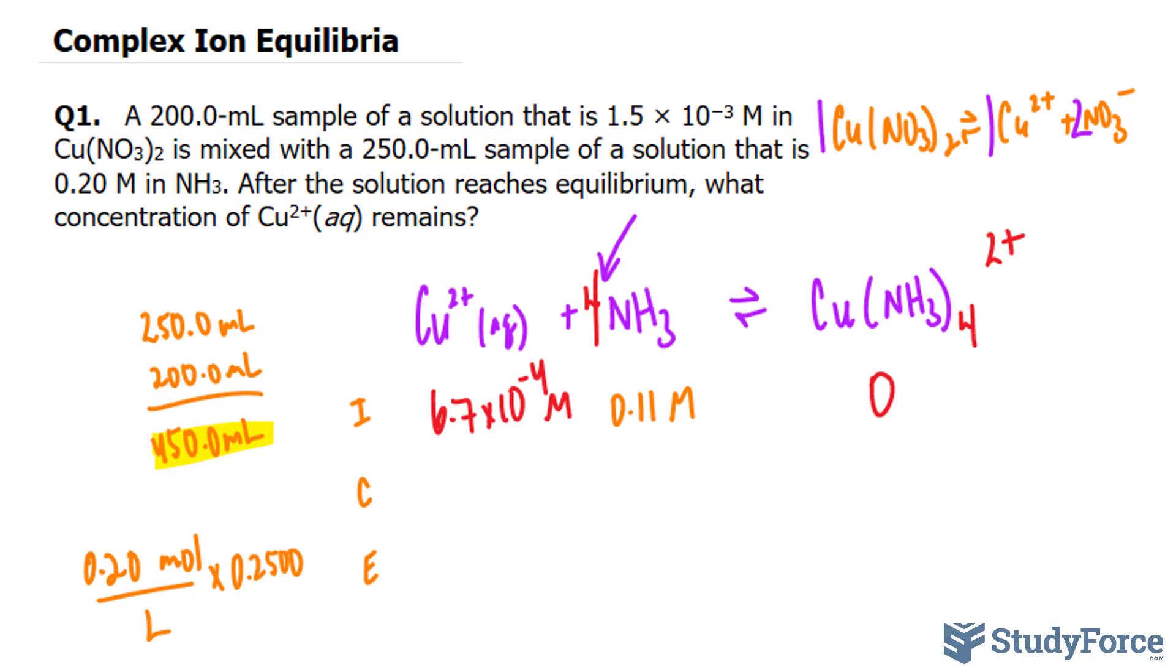You can assume that the reaction will be driven to the right, and most of the Cu2+ is consumed. And unlike in previous ICE tables, where we let X represent the change in concentration in going to equilibrium, here you let X represent the small amount of Cu2+ that remains when equilibrium is reached.